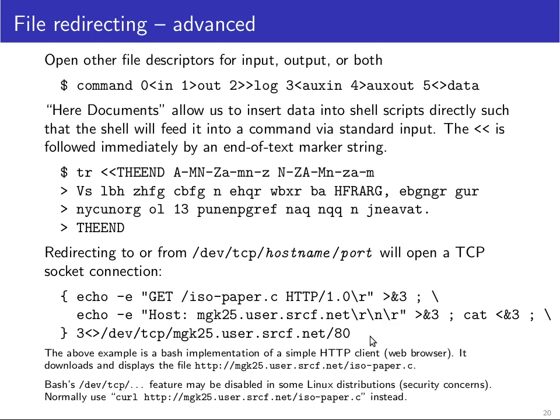This is not the normal way of accessing web pages — it's just to show a more advanced example of what you can do in the shell with file redirecting. The standard Unix tool for downloading a file via HTTP is curl: simply type curl followed by a URL, and it will output the content of that file to standard output.